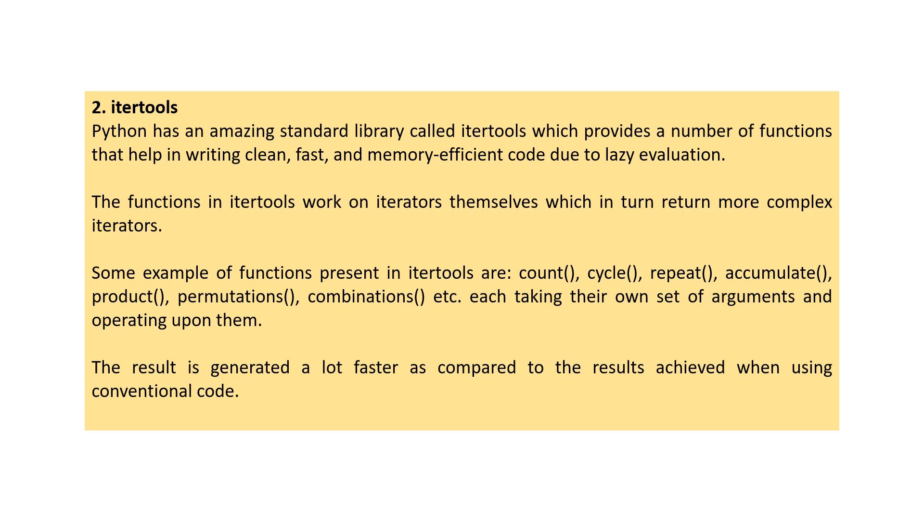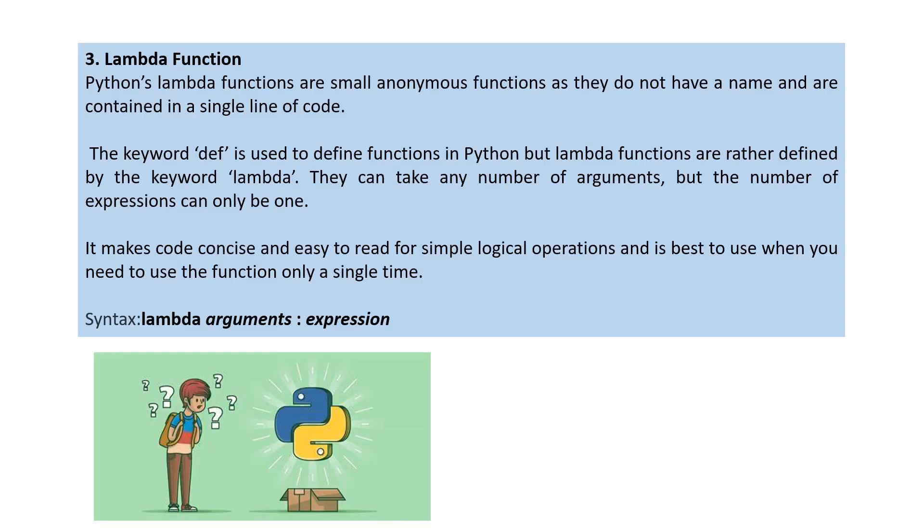Next is the lambda function. Python's lambda functions are small functions that do not have a name and are contained in a single line of code. The keyword def is used to define functions in Python but lambda functions are defined using the keyword lambda. They take any number of arguments but the number of expressions should be only one. It makes the code concise and easy to read for simple logical operations and it's best to use when you need to use the function only a single time.